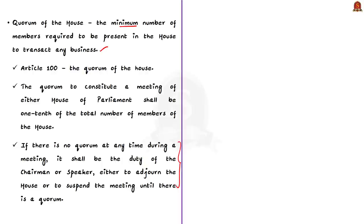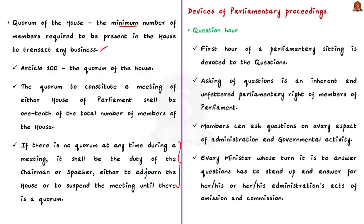Now let us talk about two important devices of parliamentary proceedings: the question hour and the zero hour. Generally, the first hour of the parliamentary meeting is devoted to questions and this hour is called the question hour. It has special significance in the proceedings of parliament. Asking questions is an inherent and unfettered parliamentary right of the members. During the question hour, members can ask questions on every aspect of administration and governmental activity.